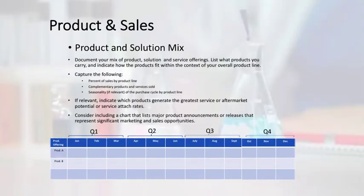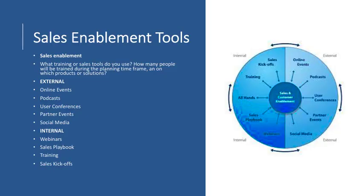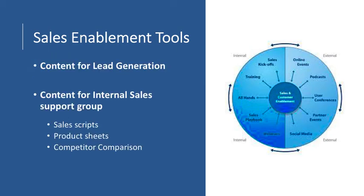Product and sales. When planning, consider producing a chart with your major product announcements and launches by product offering and quarter. Sales enablement tools are tools to boost your business, increase sales, and drive business growth. Elements that are part of sales enablement tools include content for lead generation — we have blog posts, white papers, e-books, and case studies. Constantly remind your sales team that these are readily available for them to use.